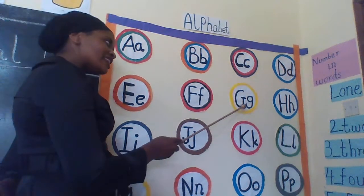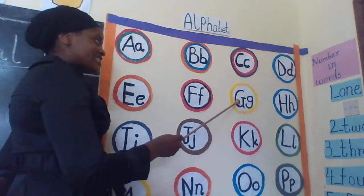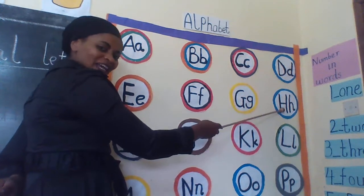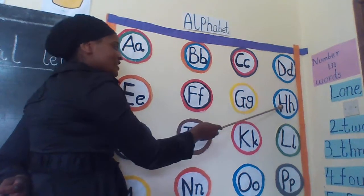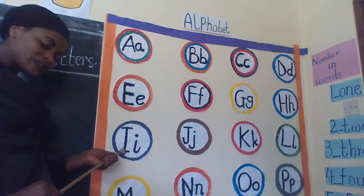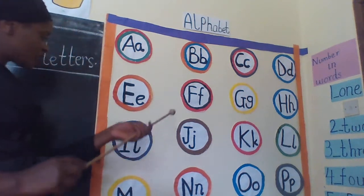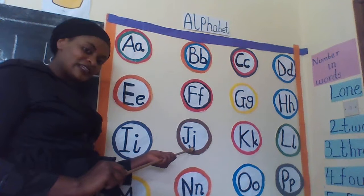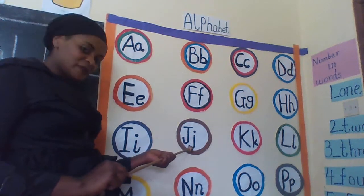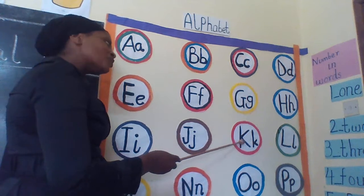Call some. Can you repeat after me? Capital letter D, small letter G. Capital letter D, small letter G. Capital letter K, small letter K. Capital letter K, small letter K.